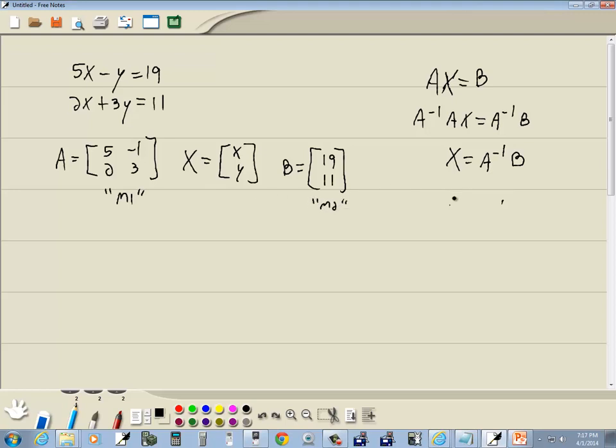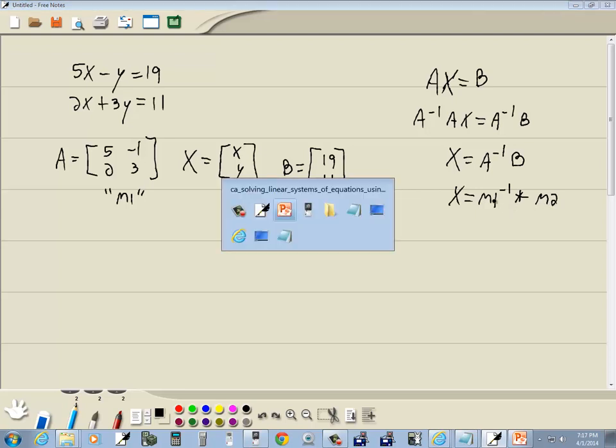So really, what we're going to be working with is the inverse of A, which is put into M1. So we have the inverse of M1 times B, which we put into M2. And I'll put the multiplication in there. I'm not sure if you actually need that on HP Prime, but it doesn't hurt anything.